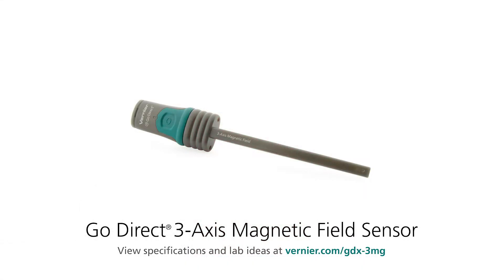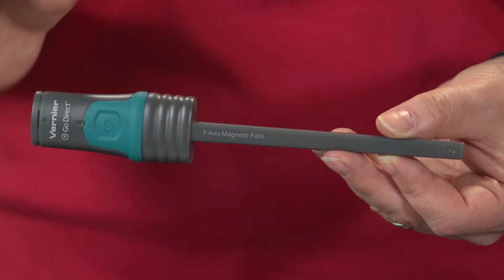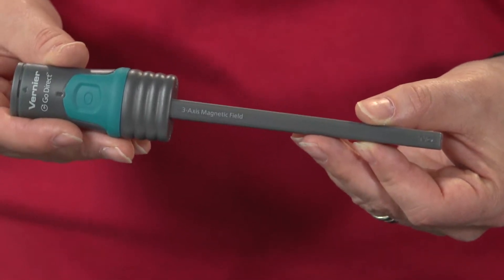This is the GoDirect 3-axis magnetic field sensor. Don't worry though, it says 3-axis on it, but when you turn it on and connect it to graphical analysis, you'll only see one channel measuring one direction of magnetic field, and it's easy to use.